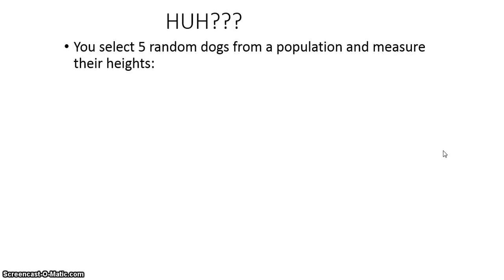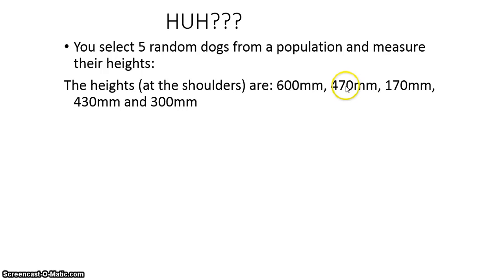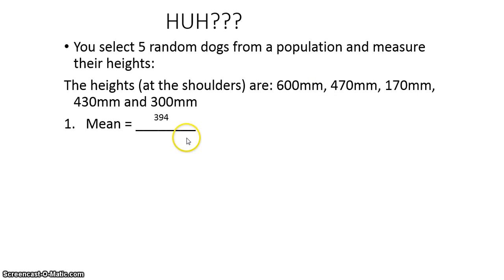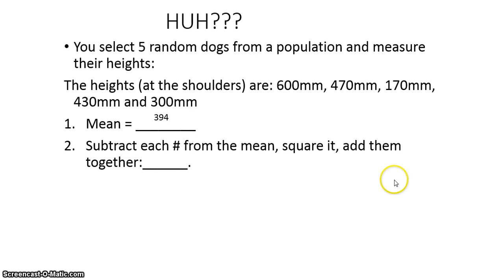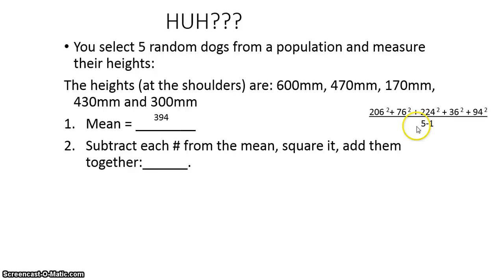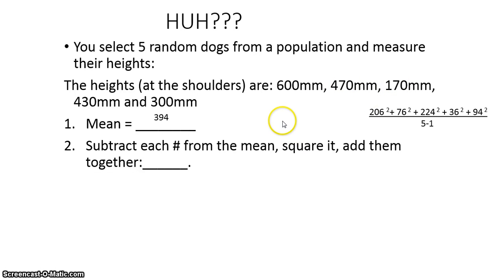They gave you five dogs and said that these were their heights: 600, 470, etc. So the first thing you would do is calculate the mean — add them up, divide by 5. The mean you get is 394. You then would subtract each one of these numbers from the mean, square it, and add them all up. So: 394 minus 600 is 206 squared; 394 minus 470; 394 minus 170; and so on. You square them all.